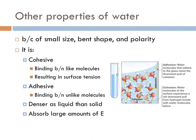Water has some other interesting properties. Because it's really small, has a bent shape, and is polar, it is cohesive, adhesive, denser as a liquid than a solid, and can absorb a lot of energy. It's cohesive, meaning it can bind between like molecules. Water binds to water, resulting in surface tension. If you've ever seen a little insect walking across water, the reason is surface tension because of the cohesive property of water.